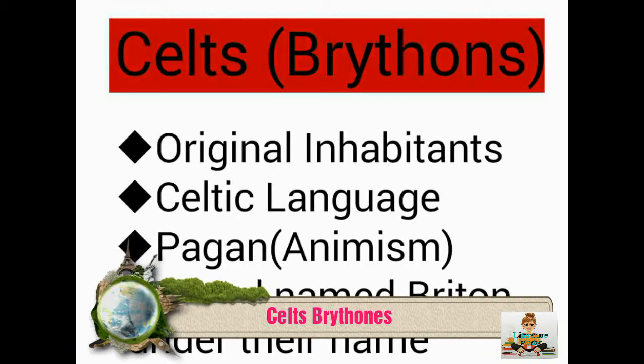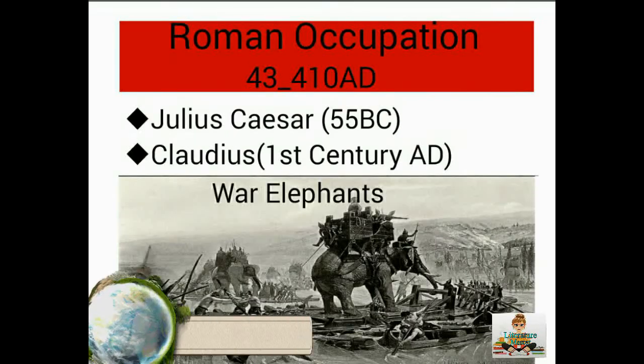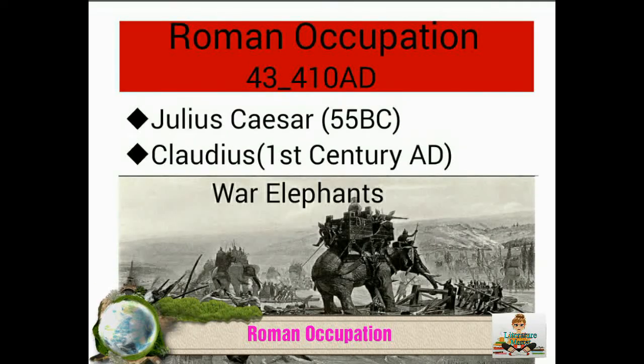Now let's talk about the Celts. They were the original inhabitants of the island; their language was known as Celtic. They were pagan and their religion was known as animism, a Latin word for spirit. They were also known as Brythons, so the island was named Britannia under their tribal name.